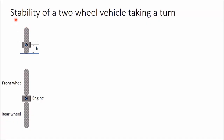In this video we will discuss stability of a two-wheel vehicle taking a turn. This is a two-wheel vehicle where this is the front wheel, rear wheel, and engine. This is the center of gravity of the vehicle in top view, and this is the center of gravity in front view. Its distance from the road surface is h.